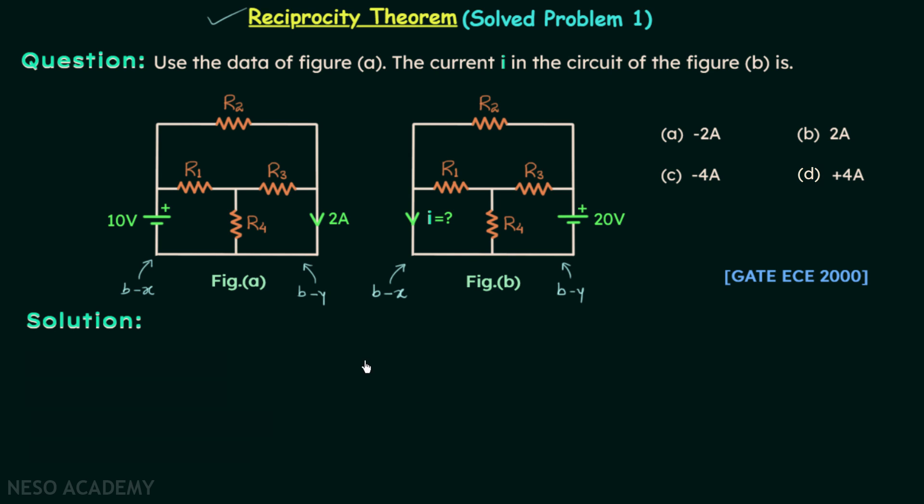Condition number 1 is this network should be linear. We have 1 voltage source and 4 resistors. They all are linear and therefore the network is a linear network. So condition number 1 is satisfied.